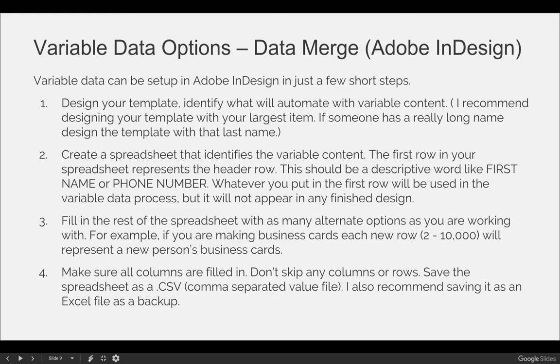The first step is to design your template and identify what will automate with your variable content. I recommend designing your template with your largest item — if somebody has a really long last name, design the template with that long last name. For example, if we're doing a business card and automating the address, phone number, first name, and last name, put actual information in your template. If someone has a last name with 40 characters, put that person's name in so the largest name will fit the field.